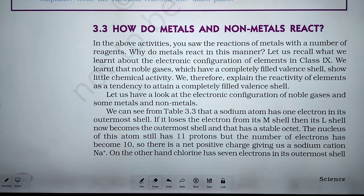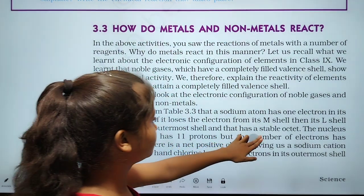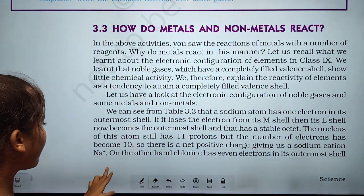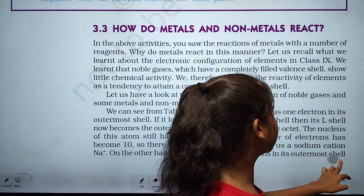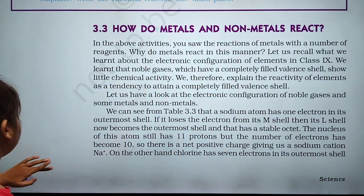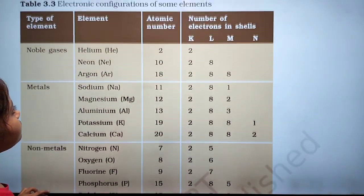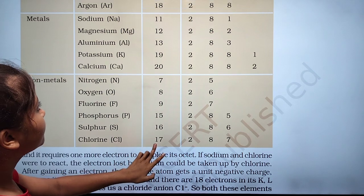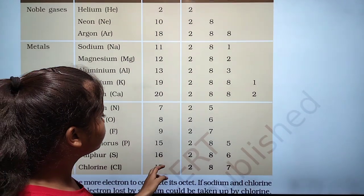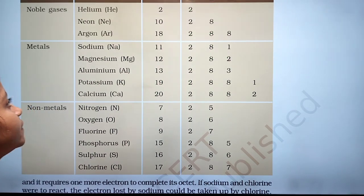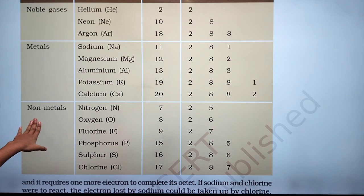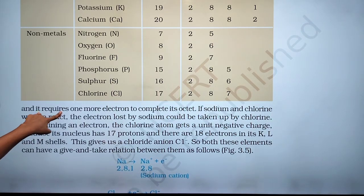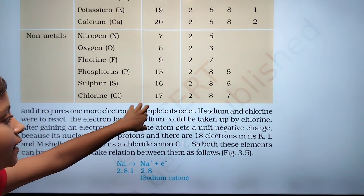Because it releases 1 electron to complete and become stable. On the other hand, chlorine has 7 electrons in its outermost shell. In the M shell there are 7 electrons, and to complete the octet it requires one more electron.